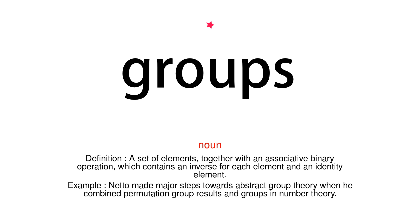A set of elements, together with an associative binary operation, which contains an inverse for each element and an identity element. Neto made major steps towards abstract group theory when he combined permutation group results and groups in number theory.